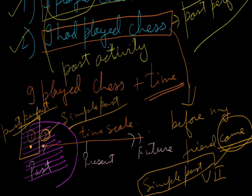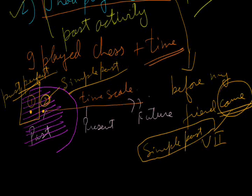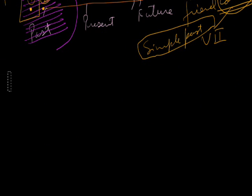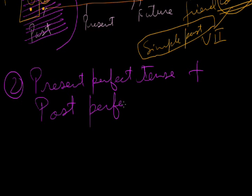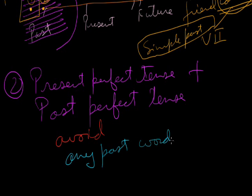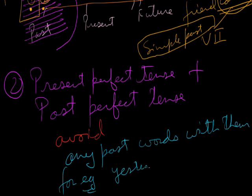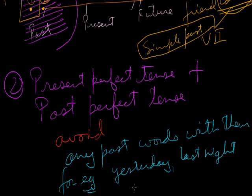I hope that is clear regarding simple past and past perfect tense. Moving on to the second point — another interesting point. With present perfect tense and past perfect tense, we should avoid any past words with them. For example: yesterday, last night, previous night, a fortnight ago, a month ago, a year ago, etc.